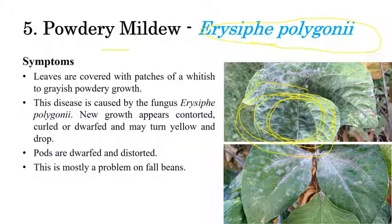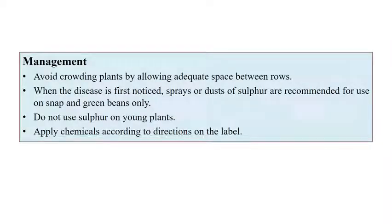In later stages, the leaves slowly curl or dry and may turn yellow. This mostly leads to falling of beans — with huge amounts of powdery deposition, parts completely detach and fall from the leaves. For management: avoid overcrowding and maintain adequate spacing. At the first notice, apply sulfur dust or spray sulfur. Do not use sulfur on young plants.